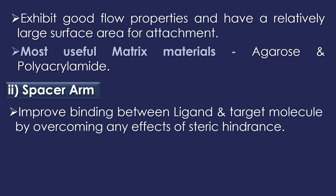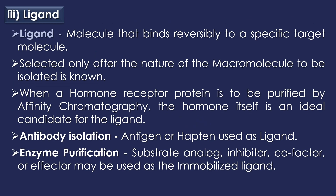The second component is the spacer arm, which is used to improve binding between the ligand and target molecule by overcoming effects of steric hindrance. The third component is ligand — the molecule that binds reversibly to a specific target molecule. The ligand is selected only after the nature of the macromolecule to be isolated is known. For a hormone receptor protein, the hormone itself is an ideal ligand. For antibody isolation, an antigen or hapten may be used. If an enzyme is to be purified, a substrate analog, inhibitor, cofactor, or effector may be used as the immobilized ligand.